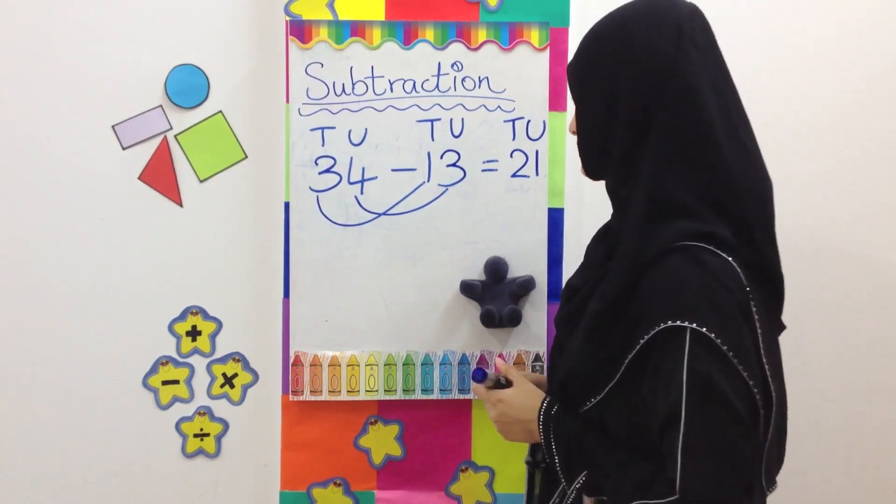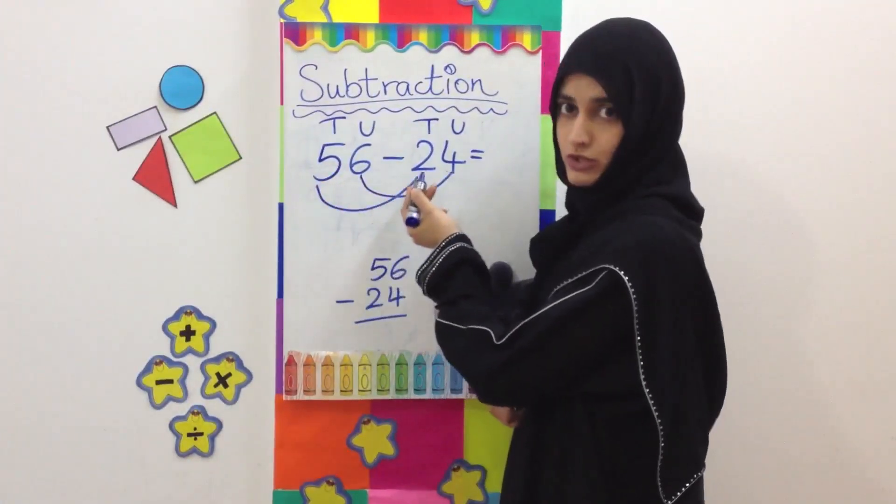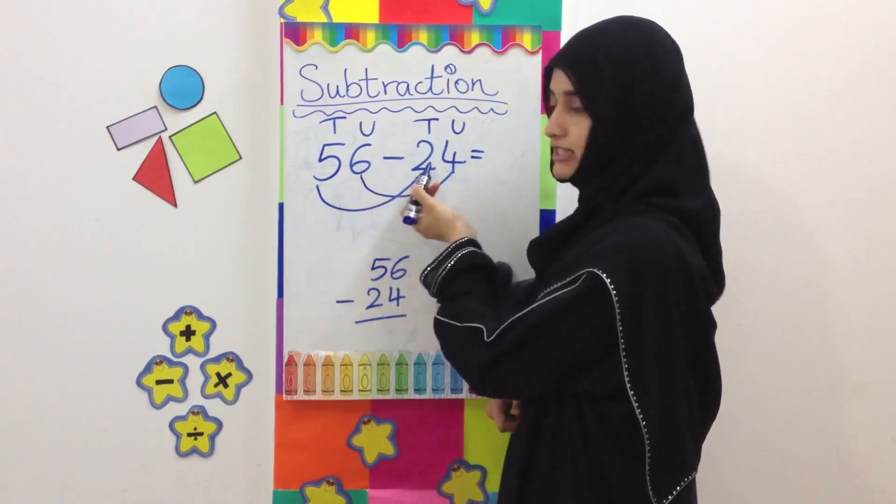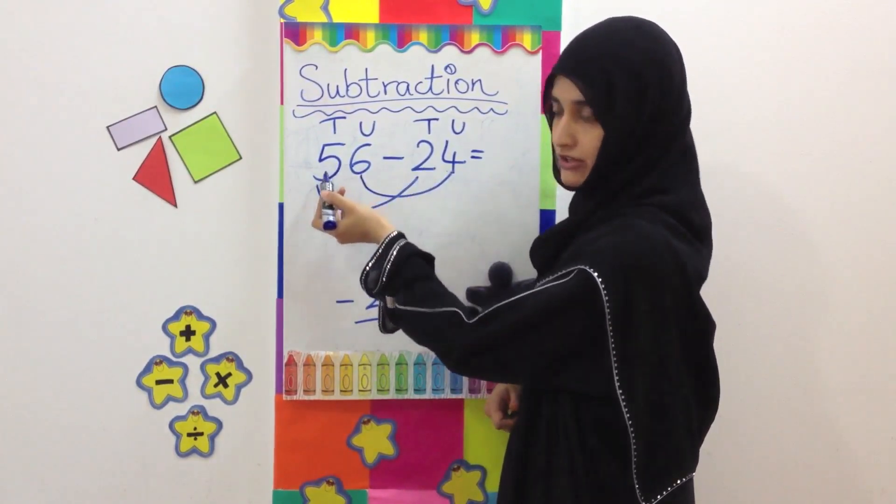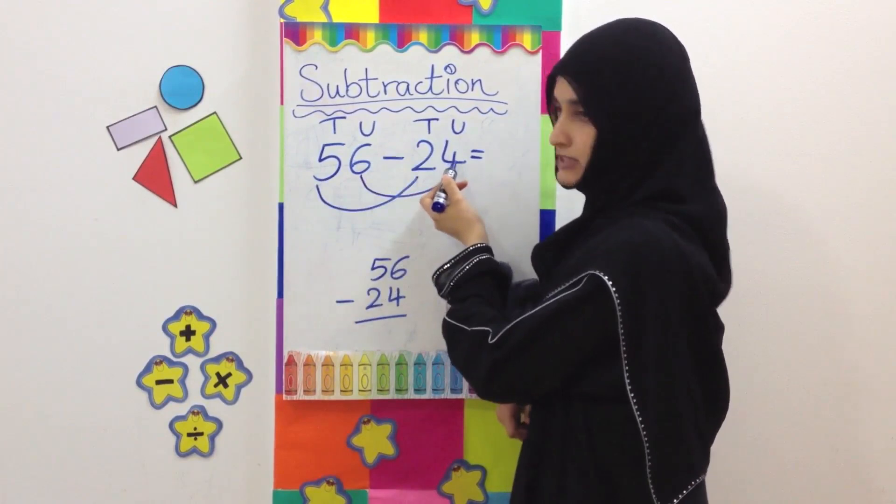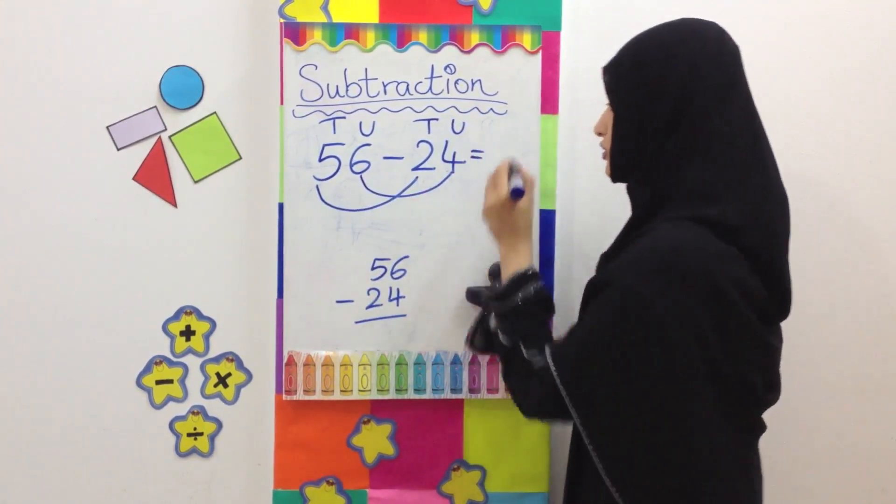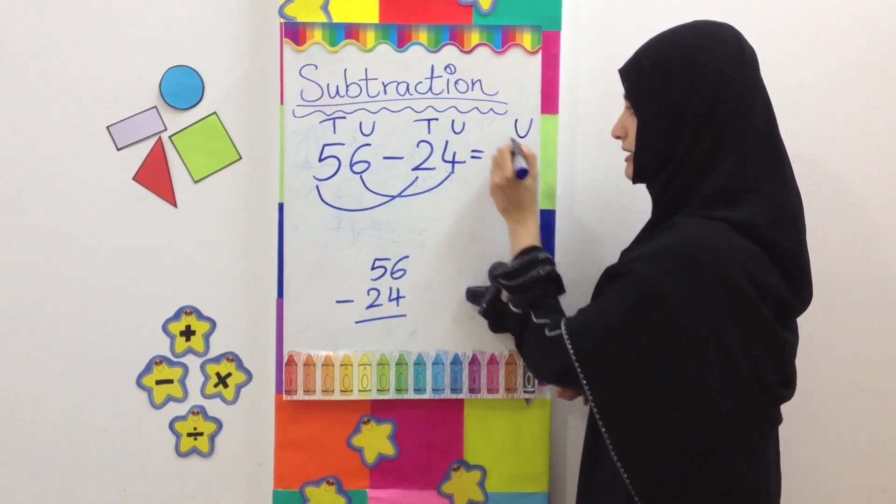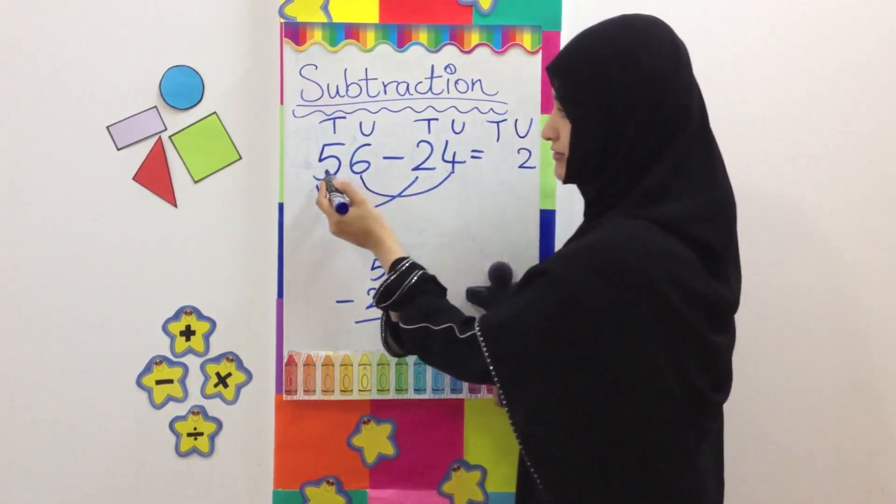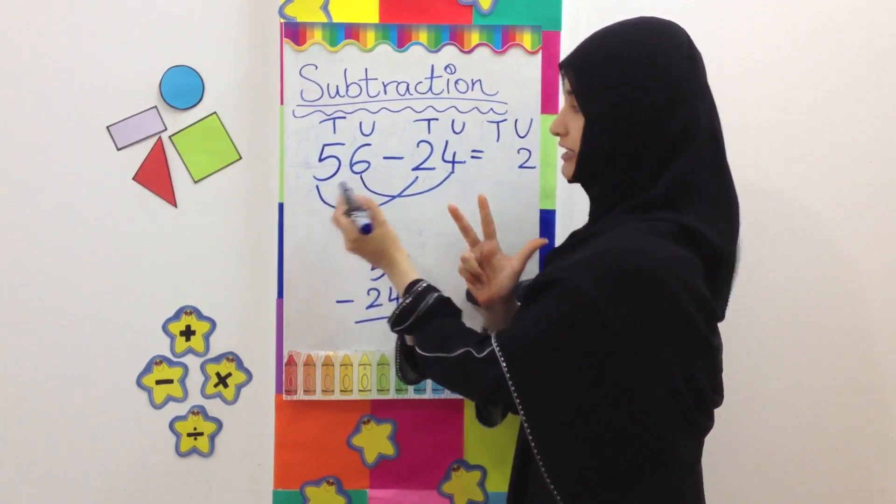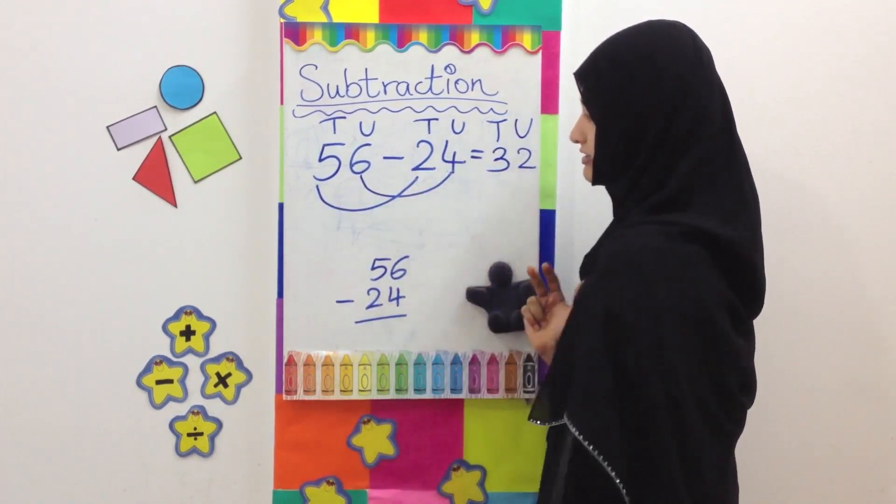56 minus 24. We are going to take away the units from the units and the tens from the tens. 6 minus 4, answer is 2. We write 2 in the units place, and then we solve the tens. 5 take away 2 equals 3. So we have 3 tens. Answer is 32.